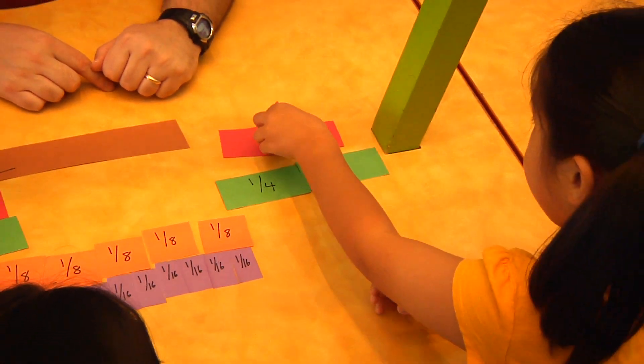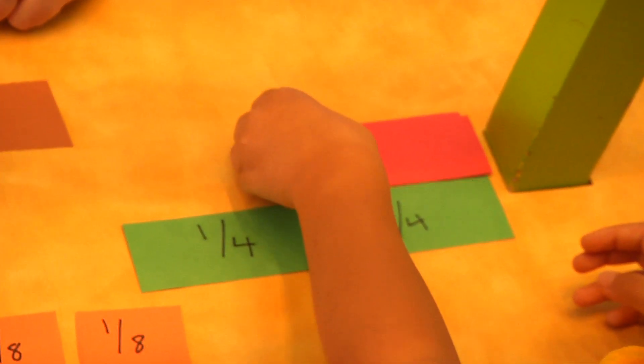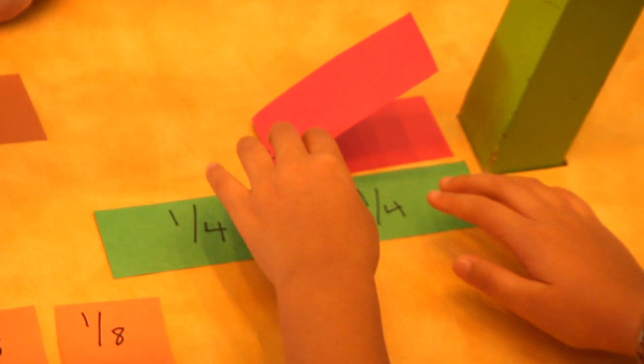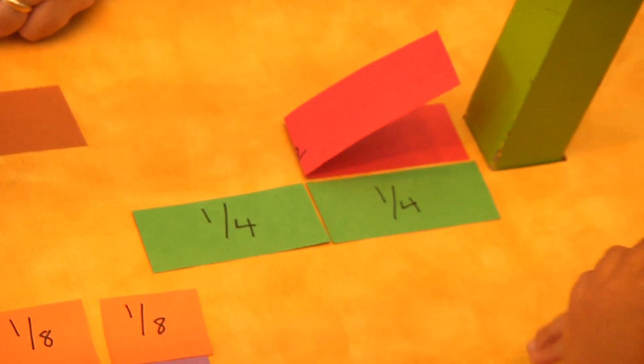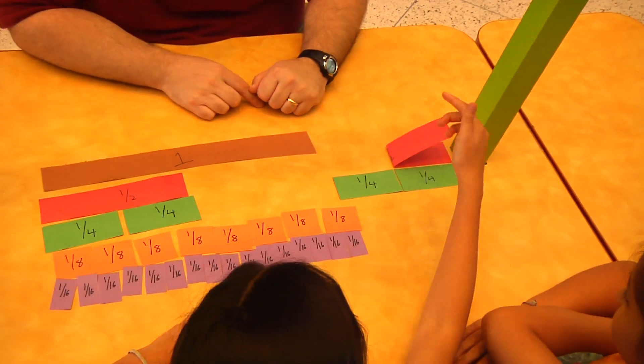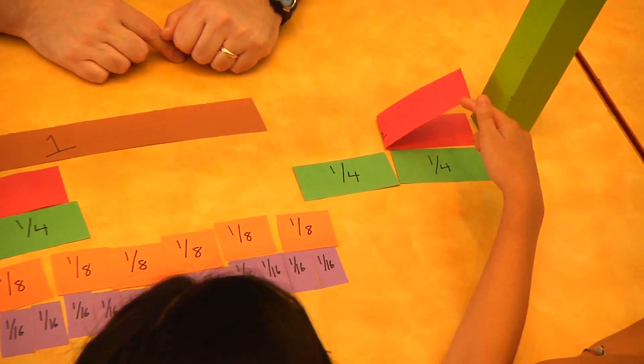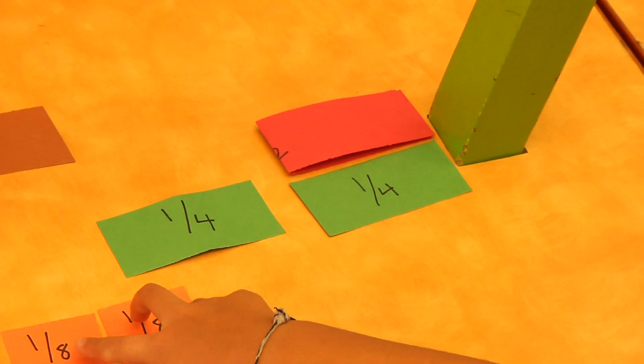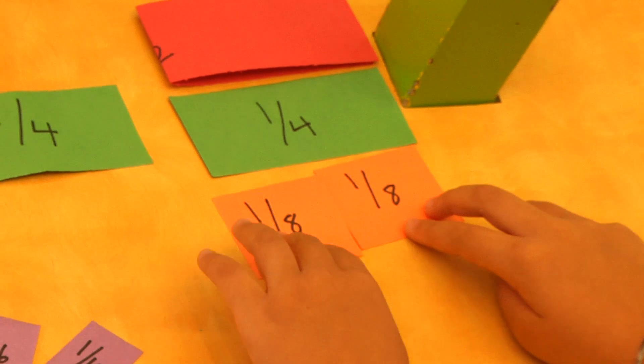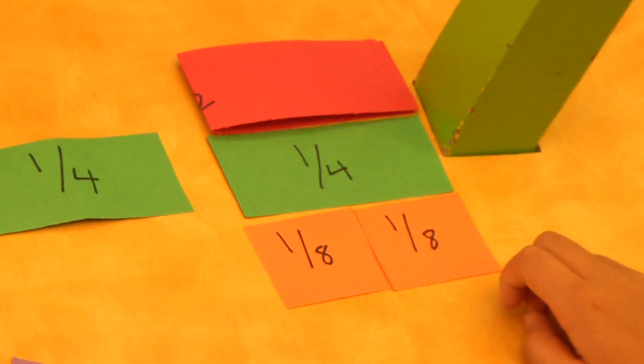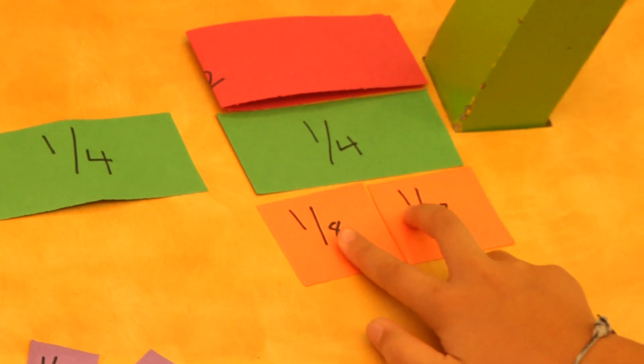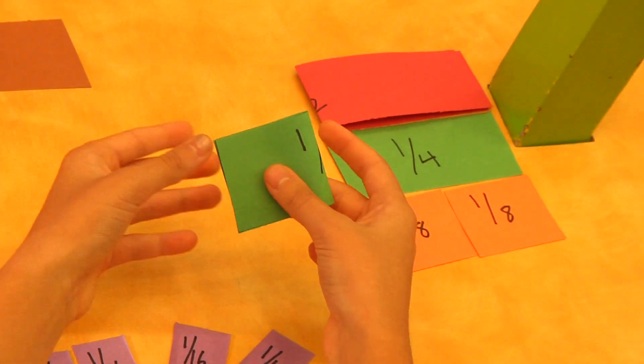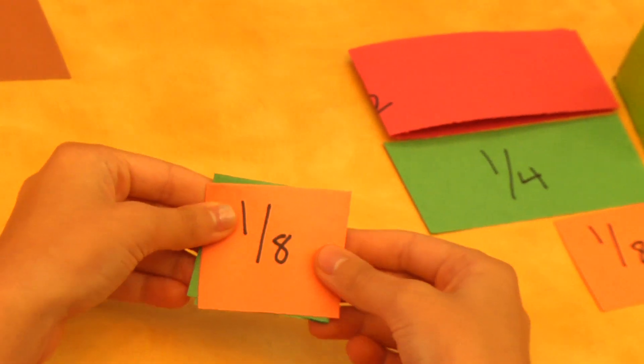Earlier you said that one half of one half is one fourth. So if we take this one half piece and fold it in half, it is the same length as one fourth. I get it, one half of one half is one fourth. So since two of the one eighth pieces are the same length as the one fourth piece, one fourth is equivalent to two eighths. And one half of one fourth is one eighth. Correct. You're getting it.